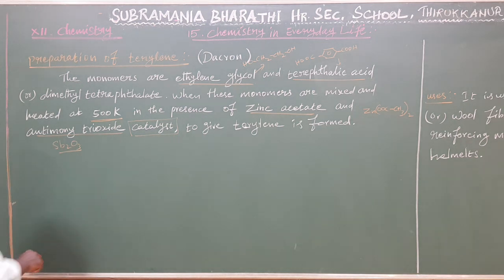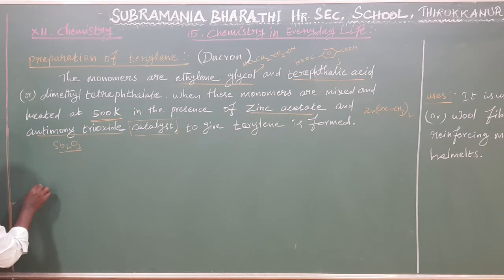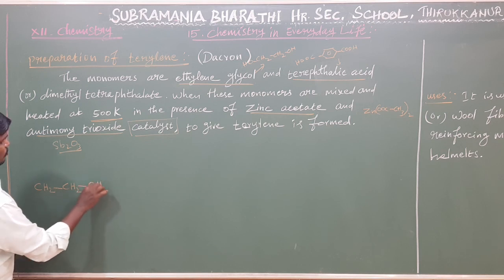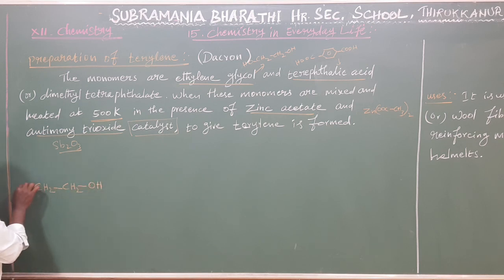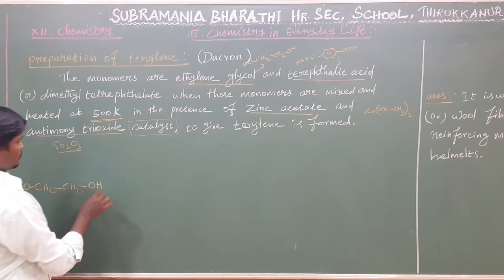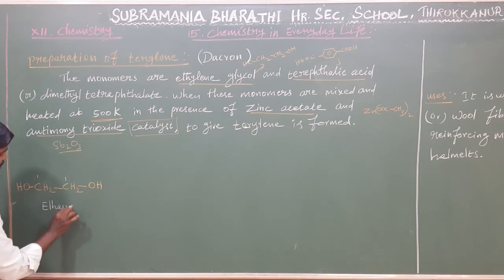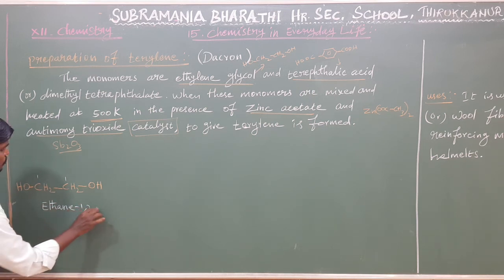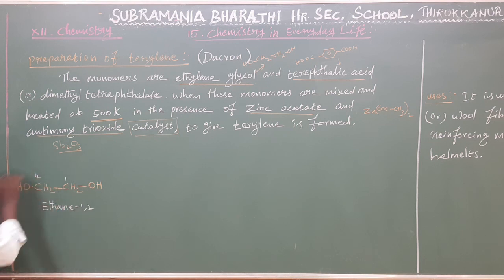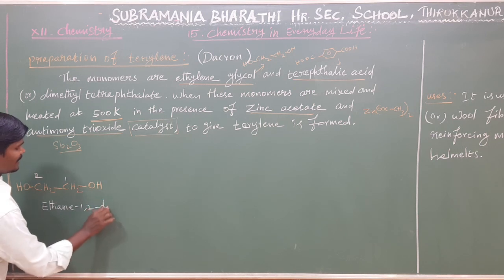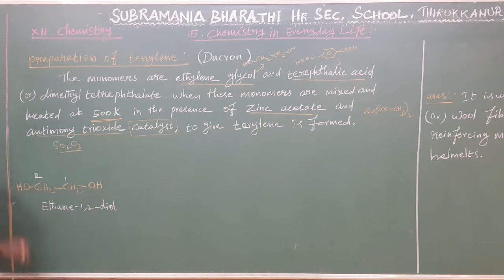Let us first take ethylene glycol. Ethylene glycol has the molecular formula CH2-CH2, which is an ethane single bond. It has an OH group on carbon 1 and carbon 2. It is a diol — ethane-1,2-diol.